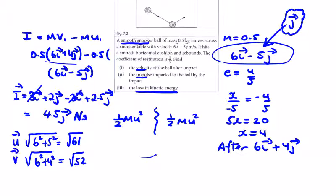U squared is 61, so a half times a half times 61 is 61 over 4 for before. A half times a half times 52 is 52 over 4 for after.